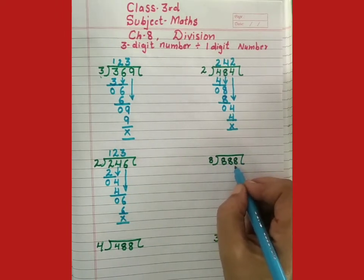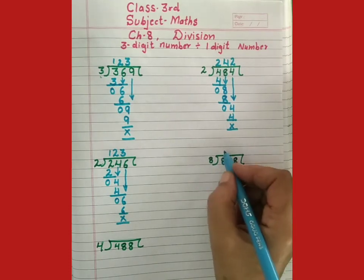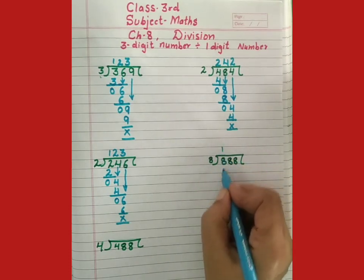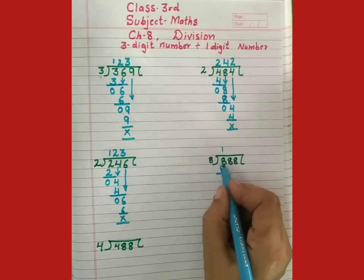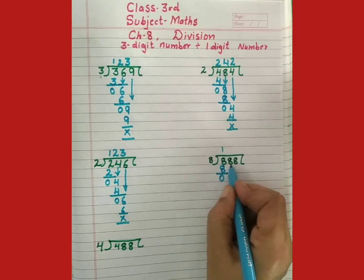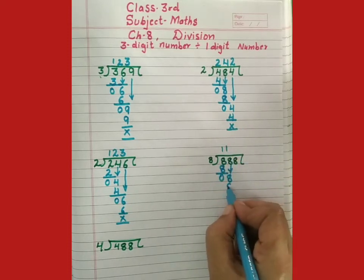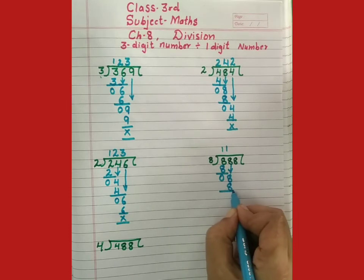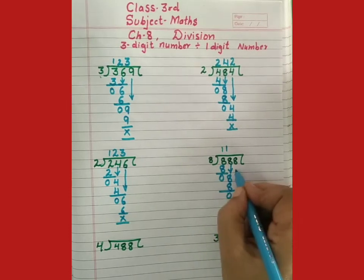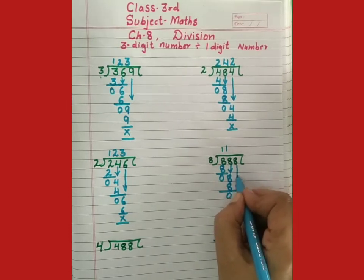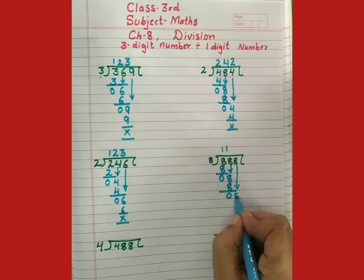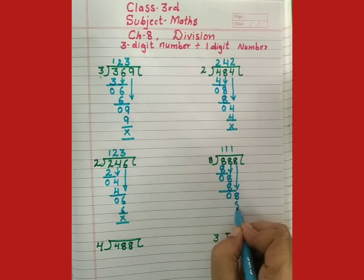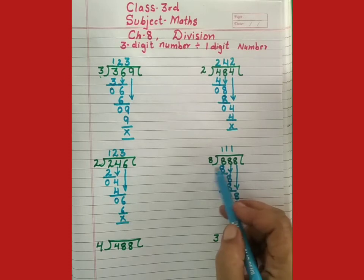Now, 888 ko 8 se divide karna hai. 8 ones are 8. Now, 8 minus 8, 0. Ab hum is number ko yahan niche lekhaayenge. 8 ke table me 8 1 pe aata hai. 8 ones are 8. 8 minus 8, zero. Now, 8 ones are 8. Students when we divide 888 by 8, quotient is 111.